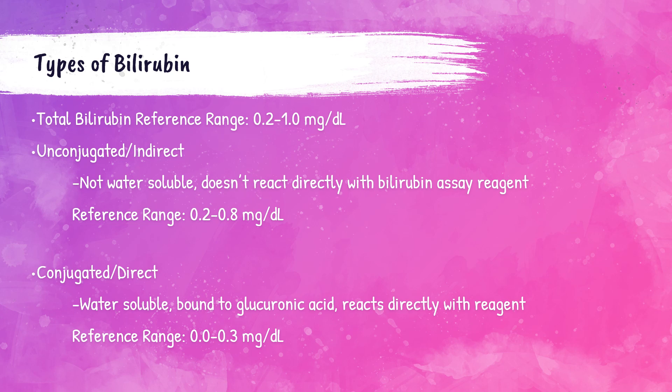Unconjugated or indirect bilirubin does not react directly with the bilirubin assay reagent because it is not water soluble, so the indirect bilirubin level is thereby calculated. This should remind you of indirect LDL cholesterol — in my lipids and lipoproteins lecture, we discussed that LDL cholesterol is usually not directly tested but produced from a calculation. The same goes for unconjugated or indirect bilirubin.